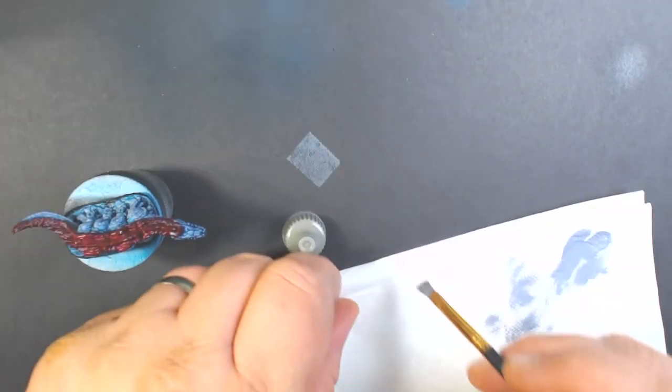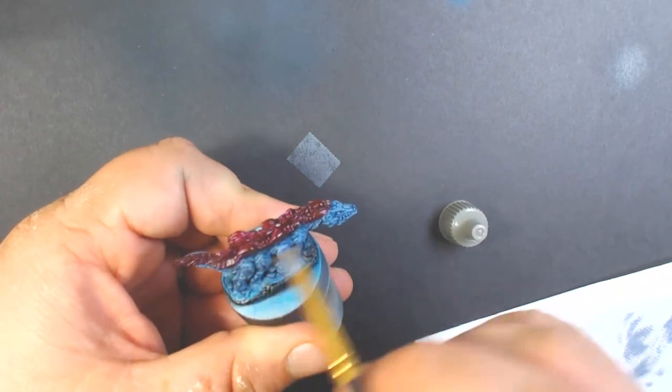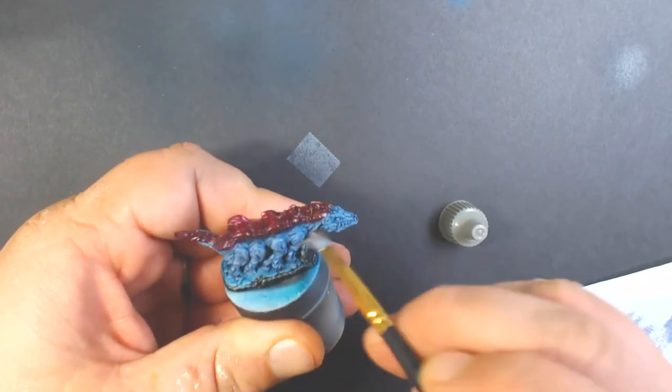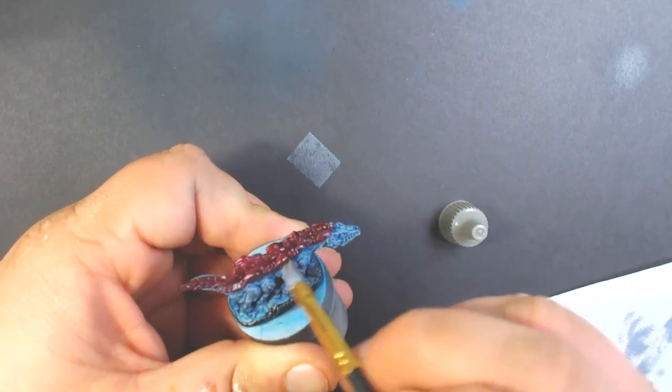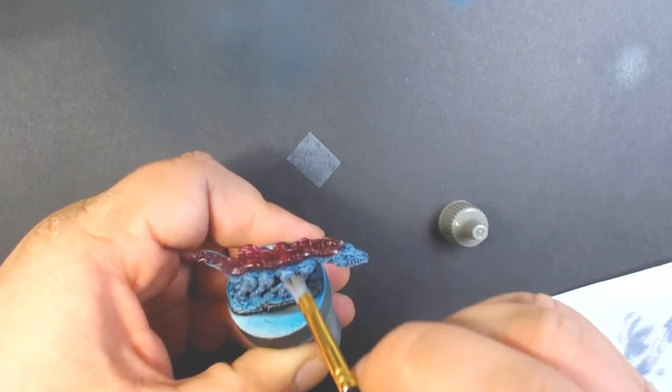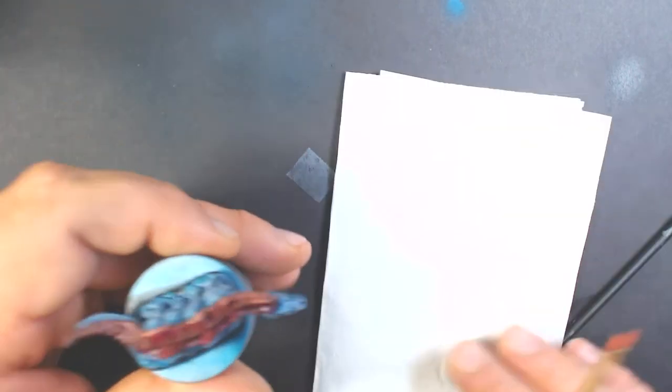Now that that's dry, going back to our Lindanis Gray and doing a quick dry brush. Then I ended up adding a little bit of pure white to that Lindanis Gray and doing a second dry brush with that.